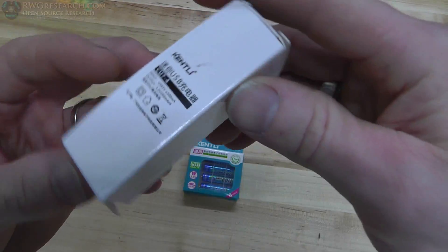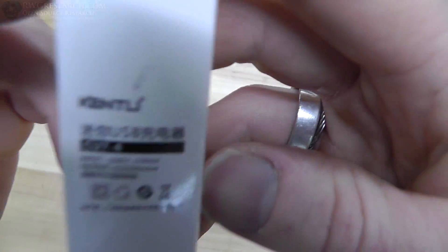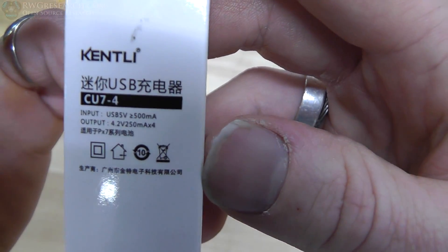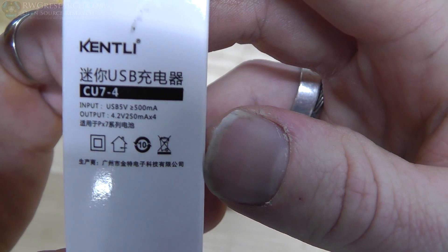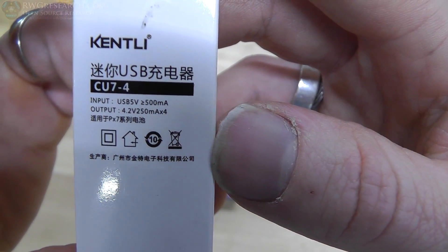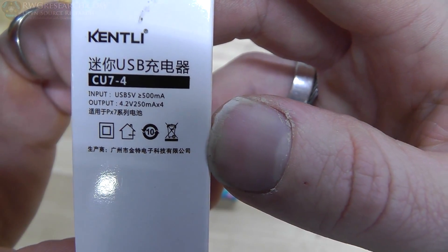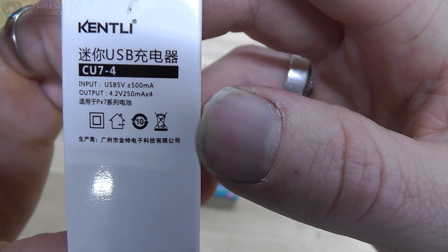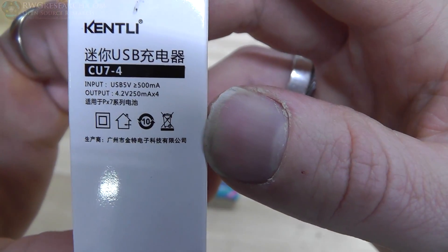So here's the charger. And if we can get it to focus, the charger actually says, okay, USB 5-volt, 500 milliamps input, 4.2-volt, 250 milliamp times 4 output. What?